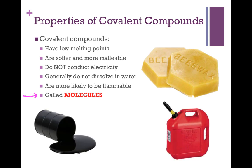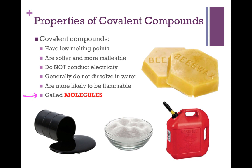We see covalent compounds in the form of liquids as well — two petroleum products, oil and gasoline, again fit our characteristics. These compounds have such low melting points they're liquids at room temperature, they don't conduct electricity, and both are very flammable. Not every covalent compound fits all these properties, however. Regular table sugar has a comparatively low melting point — though significantly higher than wax or petroleum — it's not particularly malleable, and it dissolves in water very well. This is a reminder that these properties are a guideline for many covalent compounds, but not an exclusive list.